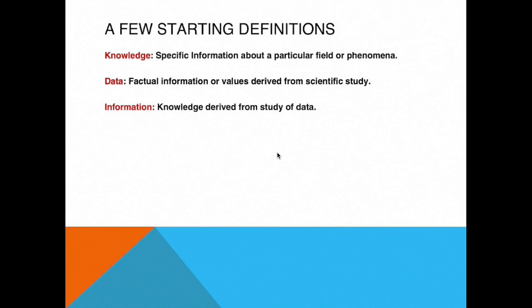We want to talk about a few definitions that we'll be using in this presentation and the presentations to come. Knowledge, data, and information. What are they? Knowledge we can define as specific information about a particular field or phenomenon. Data is factual information or values derived from scientific study. And information is meant to be knowledge derived from study of data.